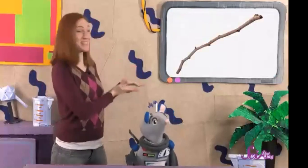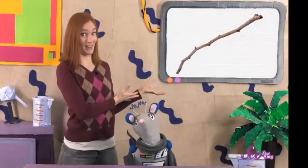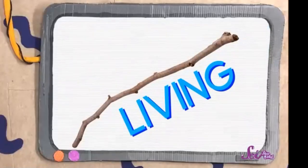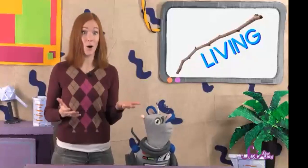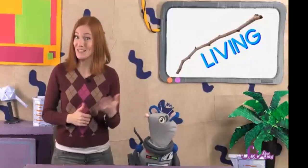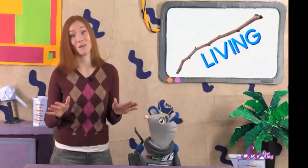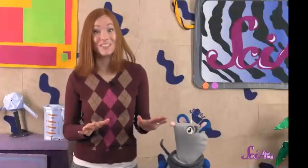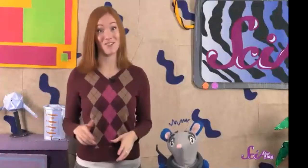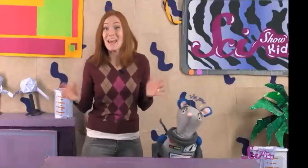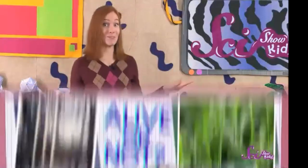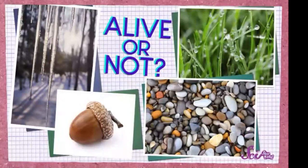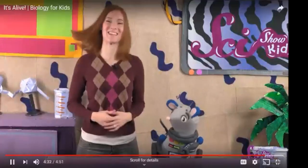What about this stick? Is it living or not living? If you said living, you're right. This stick is living because it was once part of a tree, and since the tree is a living thing, the stick can also be called a living thing. So you can use these easy rules to study everything you see around you. Go for a walk outside and take some time to stop and think about what you see — icicles, acorns, pebbles, and grass — and look at the clues we talked about. Are they alive or not? Thanks for joining us on SciShow Kids.